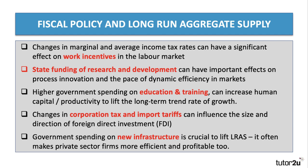On the spending side, state funding on research and development can have very important effects on the pace of process innovation and dynamic efficiency in markets, particularly in areas related to defence and education. Linked with that is spending on education and training — better funding of STEM education, better funding of industrial training, increased research grants for universities. All of these things can improve human capital and labour productivity, which are key factors determining the long-term trend rate of growth.